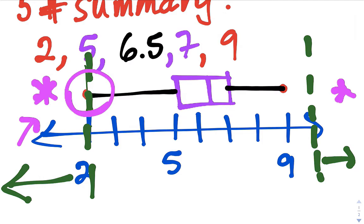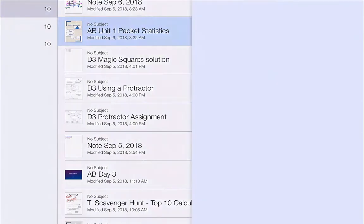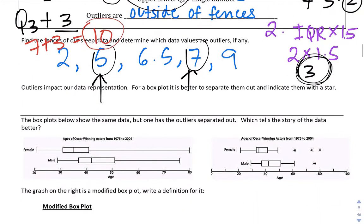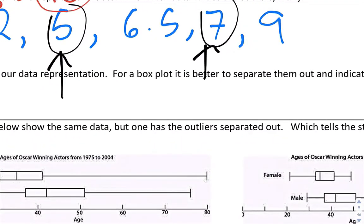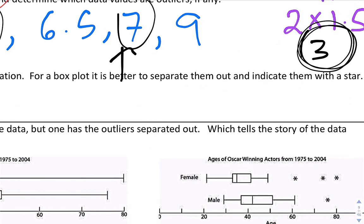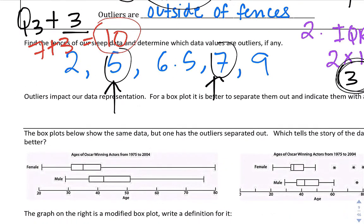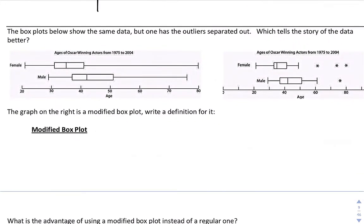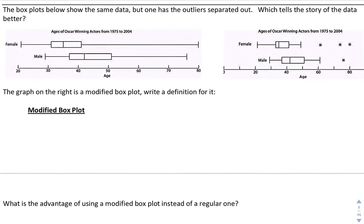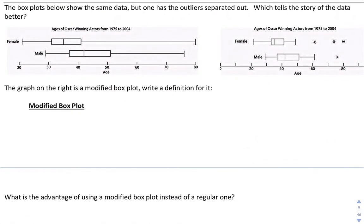So that is finding outliers. We're going to do it one more time, and in class we're going to do it several times — this will be something you're tested on. Going back to our notes: outliers impact data representation. For a box plot, it's better to separate them out and indicate them with a star. The box plots below show the same data, but one has outliers separated out, which tells the story of the data better.